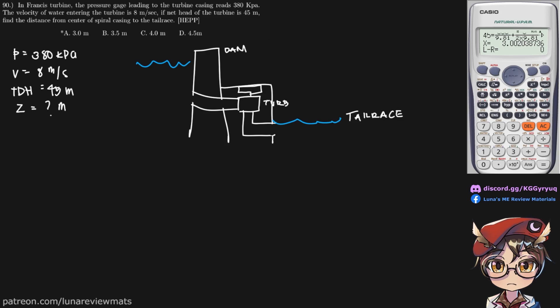So distance from the center of the spiral casing to the tailrace. This is our spiral casing. So this is the distance we are trying to look for.